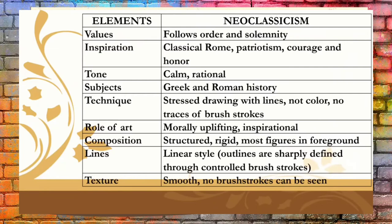Now let's do the wrap-up. Look at the table and understand neoclassical arts further. Elements: values — follows order and solemnity; inspiration — Classical Rome, patriotism, courage and honor; tone — calm, rational; subjects — Greek and Roman history; technique — stressed drawing with lines, not color, no traces of brush strokes; role of art — morally uplifting, inspirational; composition — structured, rigid, most figures in foreground; lines — linear style, outlines sharply defined through controlled brush strokes; texture — smooth, no brush strokes can be seen.